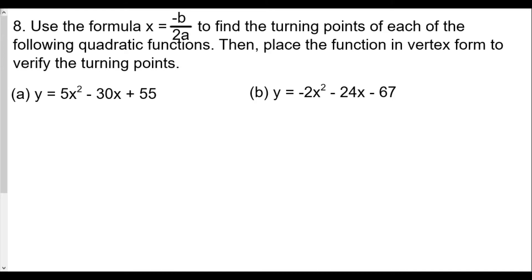So here we're going to find the axis of symmetry using x equals negative b over 2a. For part (a) y = 5x² - 30x + 55, we have a equals 5, b equals negative 30, and c equals 55. We're going to plug in and we get x equals negative of negative 30 over 2 times 5, which is 30 over 10, and therefore this becomes 3.